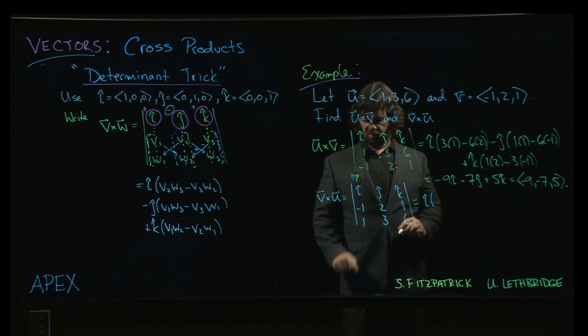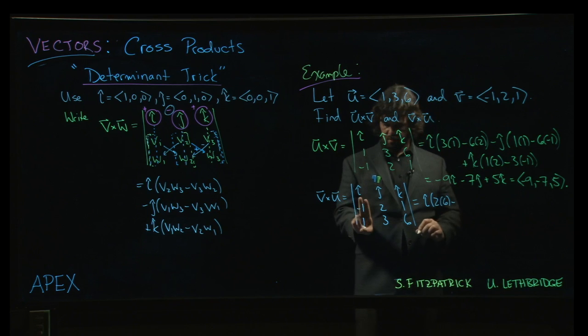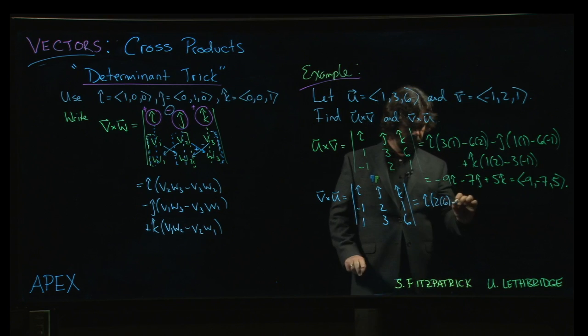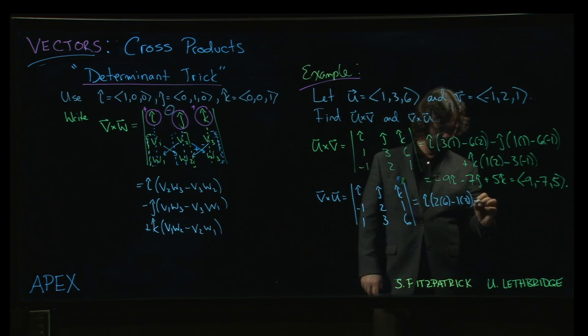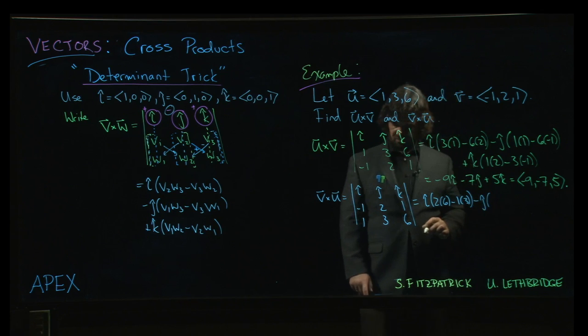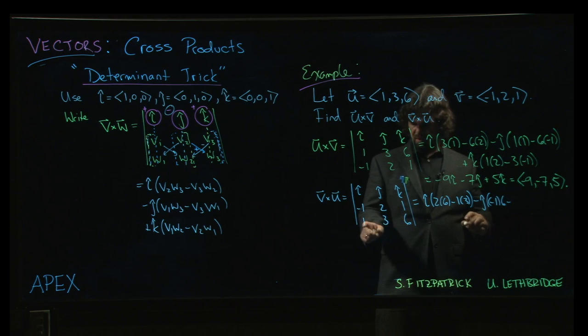And so you might be able to already guess the outcome. But let's work through the details anyway just to see what happens. So for i, we have 2 times 6. Cover those up. Minus 1 times 3. Minus j. So for j, we have minus 1. Cover up the 2 and the 3. Minus 1 times 6, subtract 1 times 1.